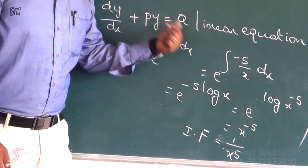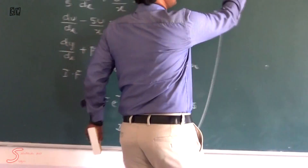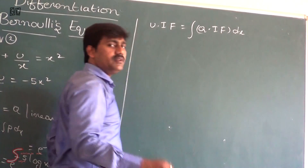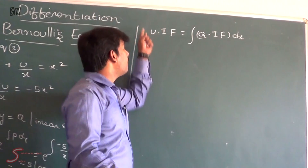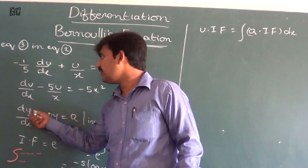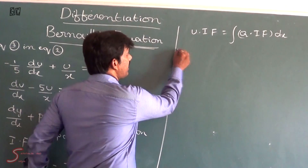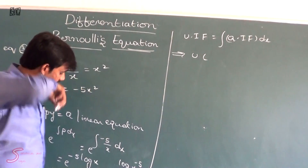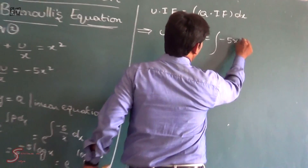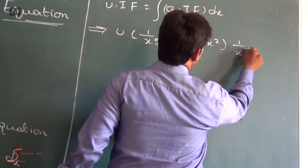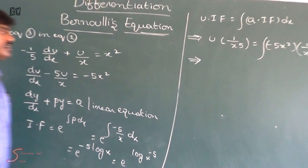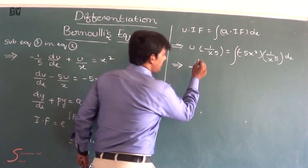For the linear equation, the solution formula is: u · IF = ∫q · IF dx. Since our equation is in terms of u (not y), we use u in place of y. So: u · (1/x⁵) = ∫q · (1/x⁵) dx. Recall u = 1/y⁵, and q = −5x².